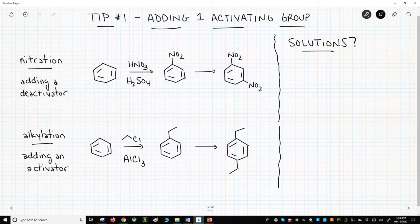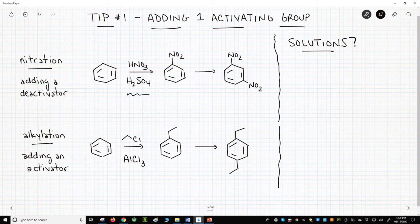Tip one, adding one activating group. Let's look at the nitration of benzene. That's our top reaction. We'll react benzene with HNO3 and H2SO4. Early in the reaction, we'll form some of the product, but we'll mostly have unreacted benzene.